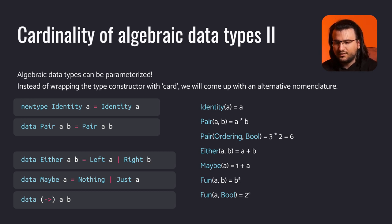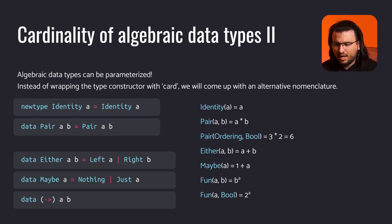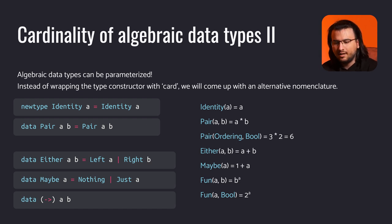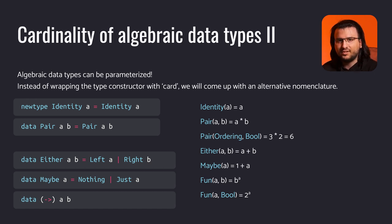Suppose we want to find the cardinality of the type pair ordering bool. We simply substitute the cardinalities of ordering and bool into our formula and get three times two, which is six. Indeed, there are only six values of the type pair ordering bool. Likewise, the cardinality of either a b is the sum of cardinalities of a and b, since either represents the basic case of a sum type.